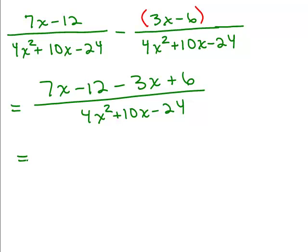If you need to take two steps or write that down, that's fine. All right, let's keep going by simplifying the numerator. So I have 7x minus 3x is 4x, and negative 12 plus 6 is minus 6.